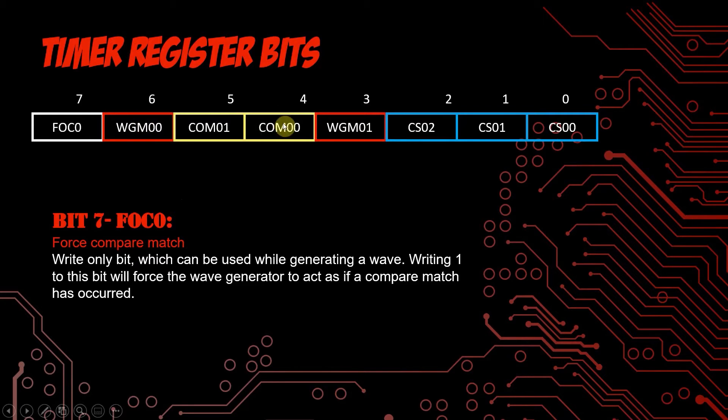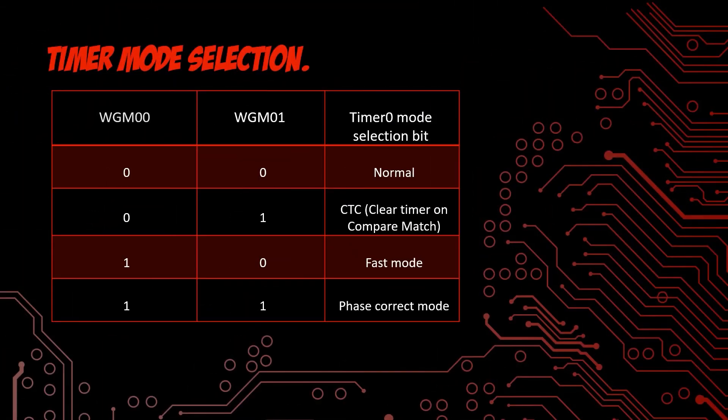When we look onto the timer register of timer 0, the initial 3 bits CS0, CS1, CS2 are used to select the clock source. The third and sixth bits are used to select the wave generator mode. The fourth and fifth bits, COM0,0 and COM0,1, are used to select the wave mode, either inverted or non-inverted. The seventh bit is used to force compare match. For bit 7, FOC0 is used to force compare match. This is a write-only bit. When this bit is written to 1, it will forcefully generate a wave.